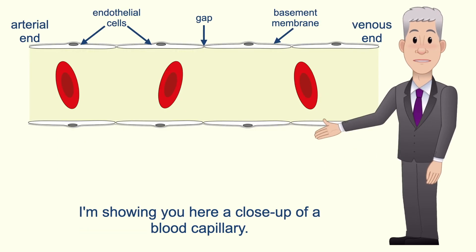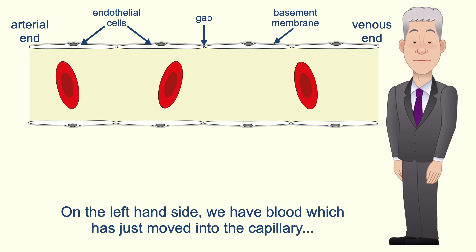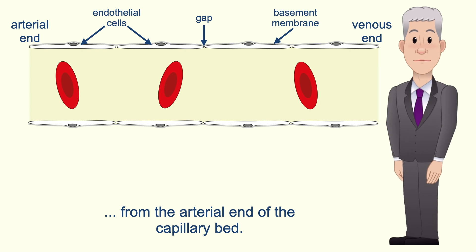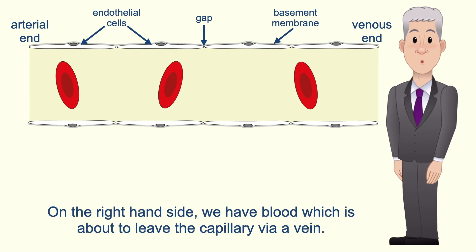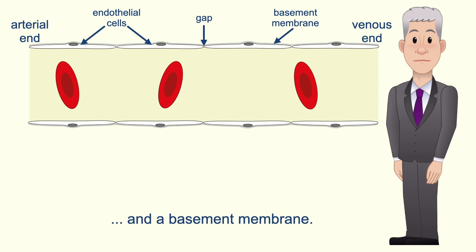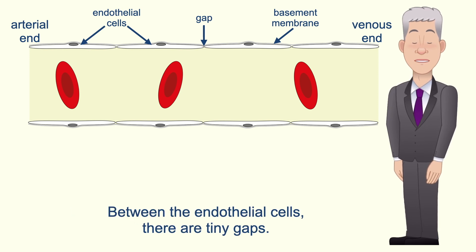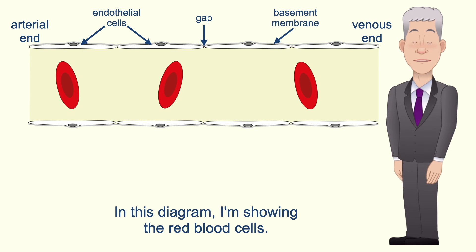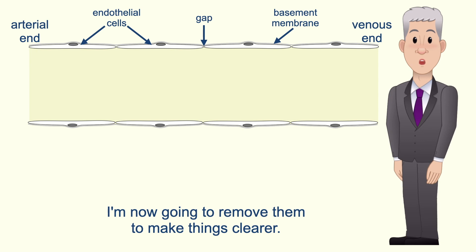You need to be able to explain how tissue fluid transfers in and out of the blood. Here is a close-up of a blood capillary. On the left hand side we have blood which has just moved into the capillary from the arterial end of the capillary bed, and on the right hand side we have blood which is about to leave the capillary via a vein. Remember that the capillary wall consists of a single layer of endothelial cells and a basement membrane, and between the endothelial cells there are tiny gaps. The red blood cells are now removed from the diagram to make things clearer.